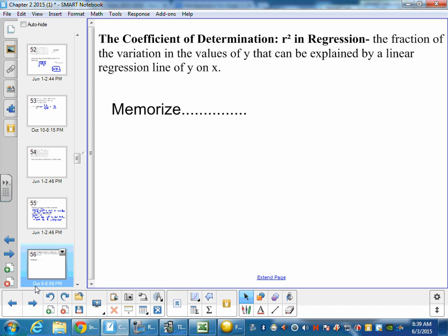Now the last thing we have to look at, and this is the most important of these three, it's the coefficient of determination, or r squared. It's the fraction of variation in the values of y that can be explained by the linear regression of y and x. This one is on the test quite a bit.